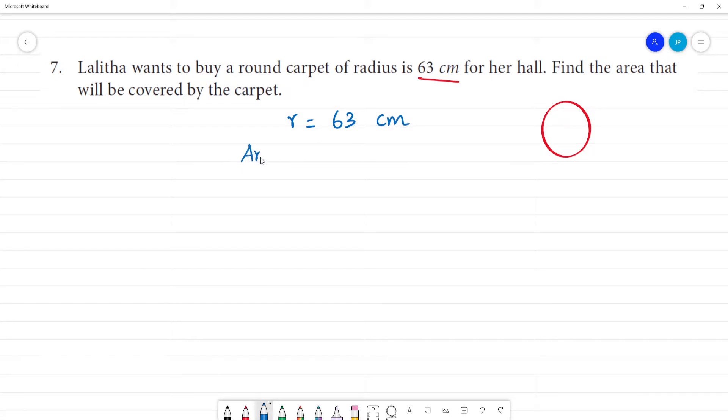Area would be formula π r square. That is equal to π would be value 22 by 7. R would be value 63, 63 multiplied by 63 cm. Now 63 cm multiplied by 63 cm. What is it?